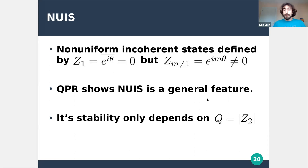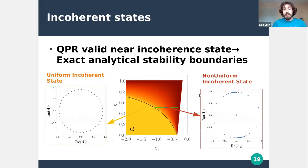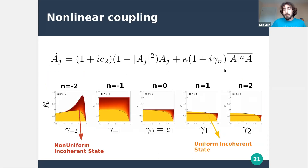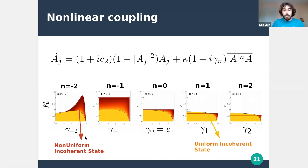We have applied quasi-phase reduction to a wide variety of systems and can prove that non-uniform incoherent states are a general feature appearing in many oscillator systems with different couplings. We can also compute their stability boundaries, and show that for a wide variety of systems the stability of non-uniform incoherent states depends only on the modulus of the second harmonic parameter. We have also applied it to nonlinearly coupled Stuart-Landau oscillators, where computing stability boundaries was very complicated using the exact system but straightforward with quasi-phase reduction.